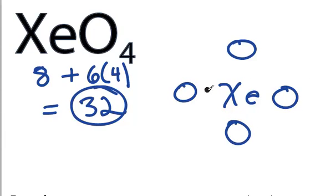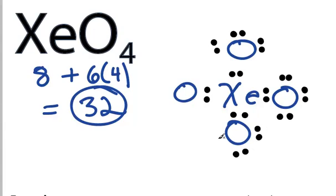We'll put a pair of electrons between each of the atoms here to form chemical bonds. We've used 8, 10, 12, 14, 16, 18, 20, 22, 24, 26, 28, 30, 32.